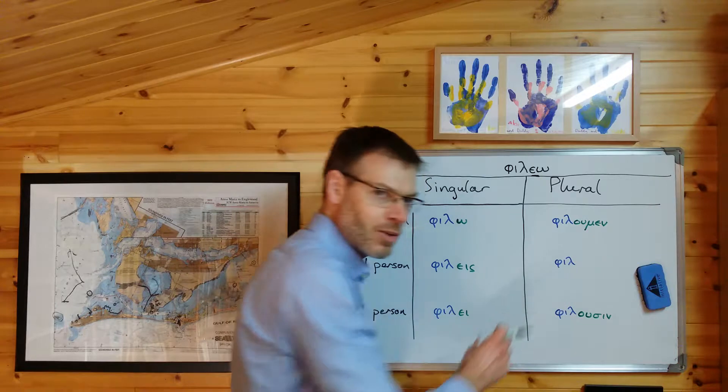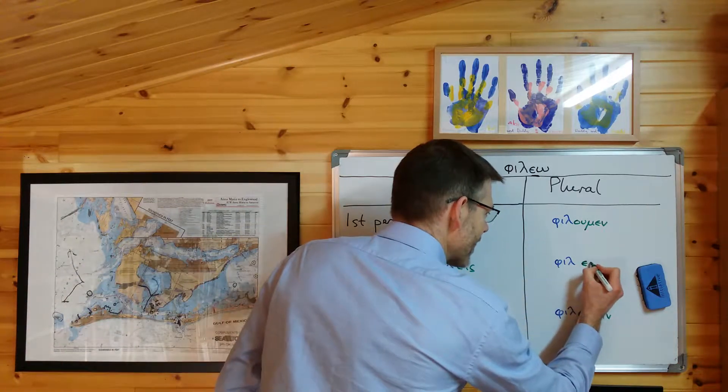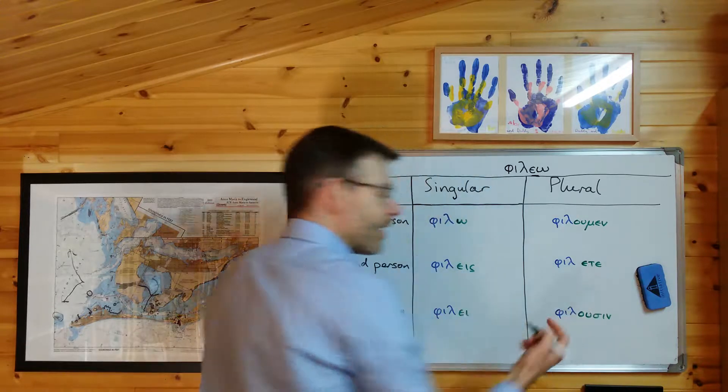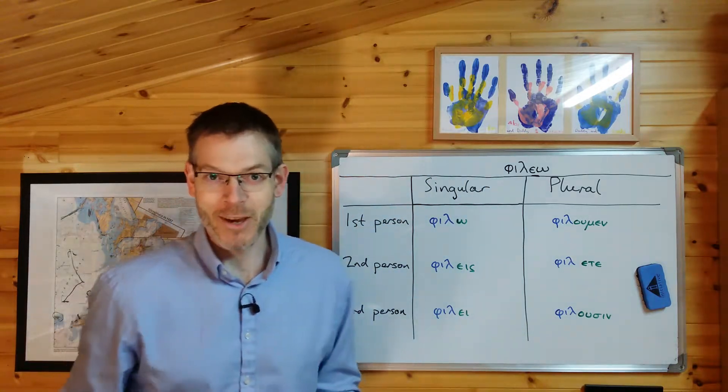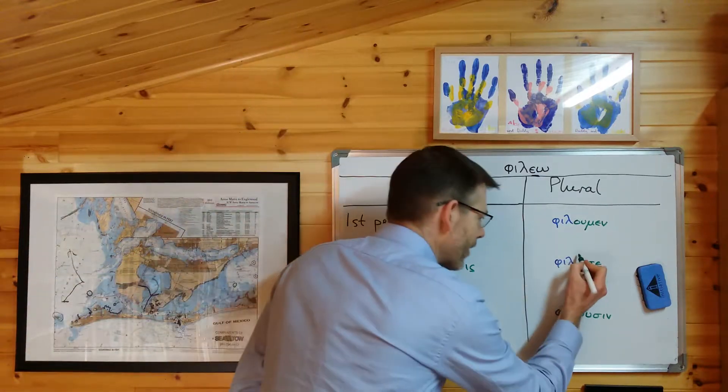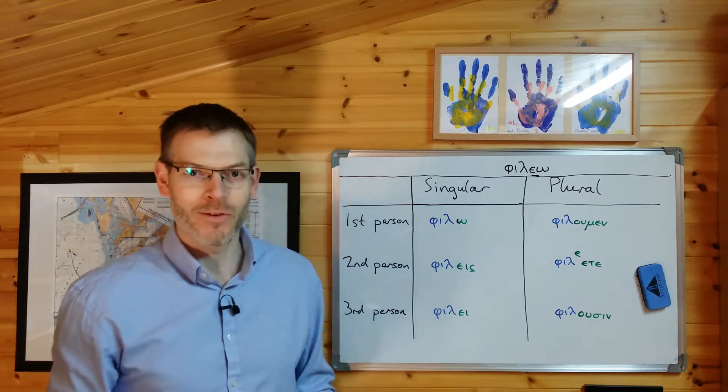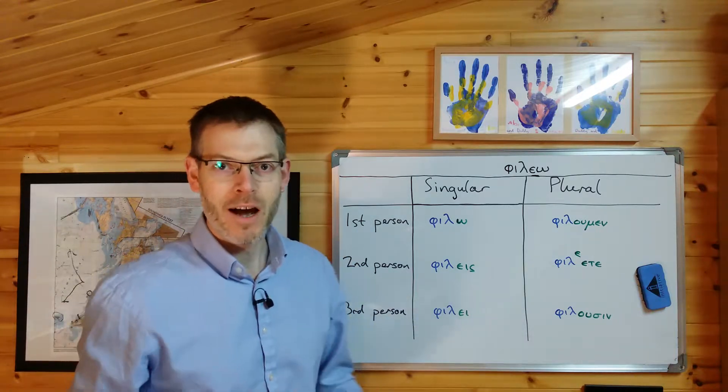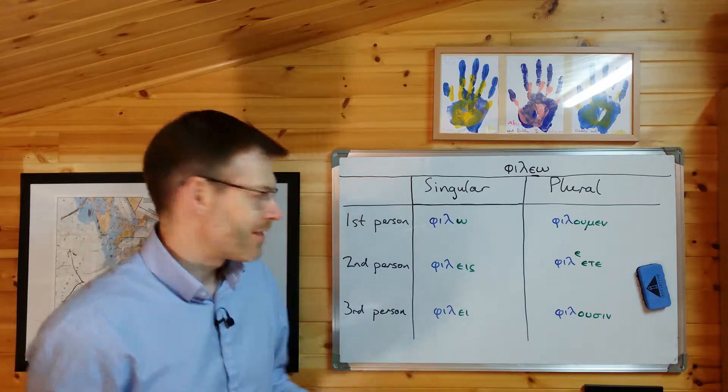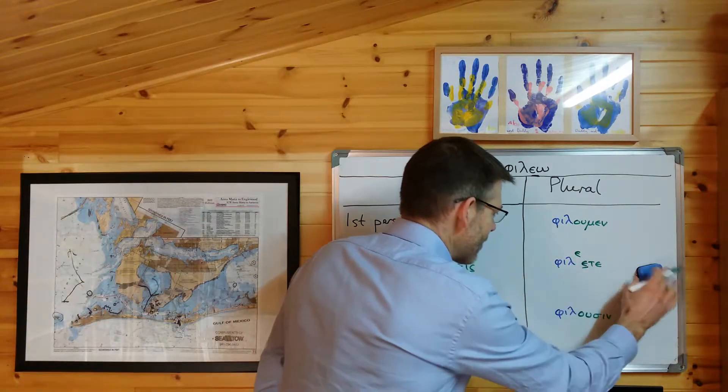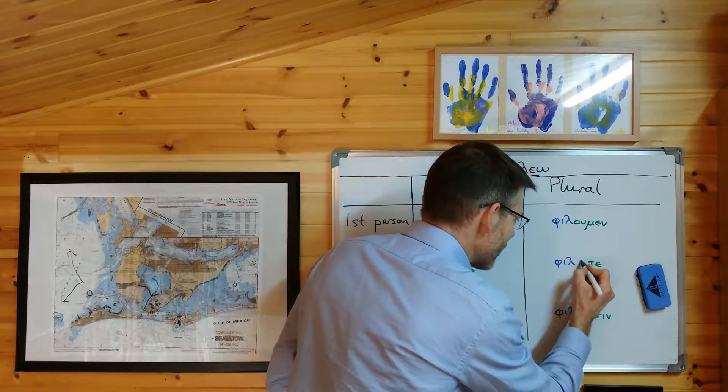The same thing happens then with the ending in the second person plural. You're used to the ending ετε, as in λύετε. But, okay, this is what I tell my kids and maybe this will help you. It certainly helps me. Here comes the epsilon, comes along, and he's not happy because he's weak. He's not happy just being a short vowel. So he says, right, I want to be either with a long vowel or with a part of a diphthong. And so it turns this epsilon into the corresponding diphthong, epsilon iota.